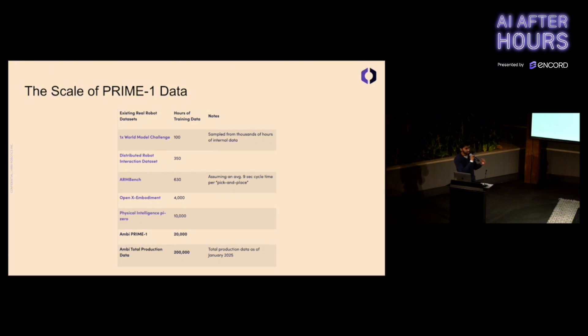Then we have Physical Intelligence's PI Zero training data set with 10,000 hours. Now we have the Prime 1 data set with 20,000 hours, so double the next closest contender. Then we have Ambi's total production data, upwards of 200,000 hours of robot data.